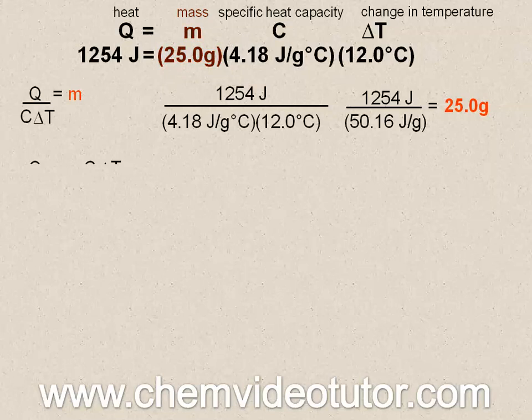Solving for the specific heat capacity can be done the same exact way, except this time you would move the mass and the change in temperature to the bottom of the other side and then divide.